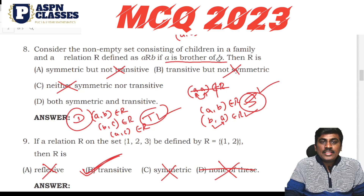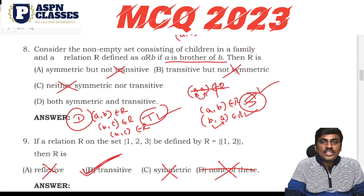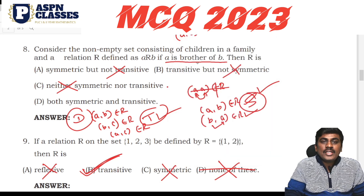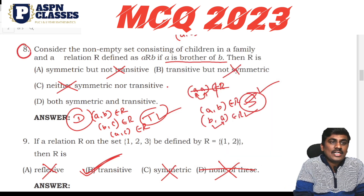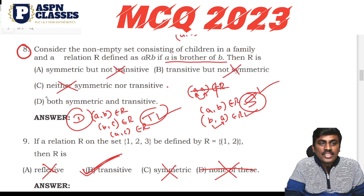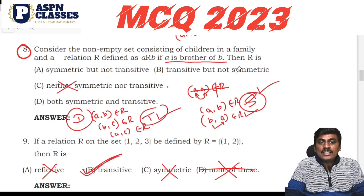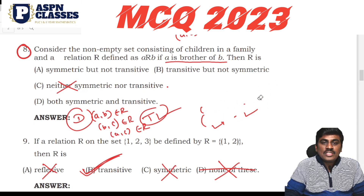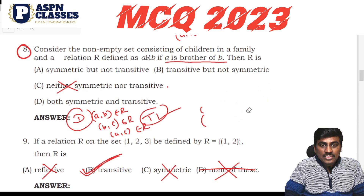We will continue the discussion from where we left off. Last class we completed up to question number 8. Now observe this question: we will discuss a problem starting from 'A is a brother of B.'